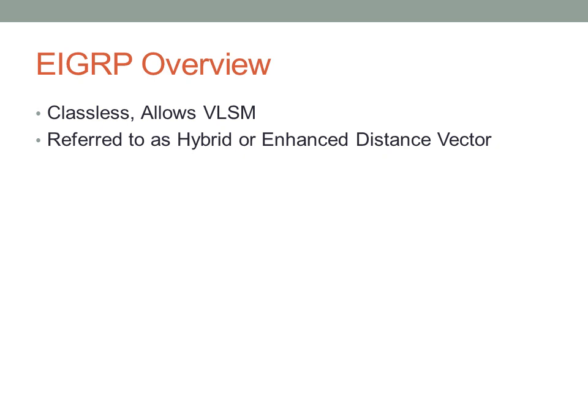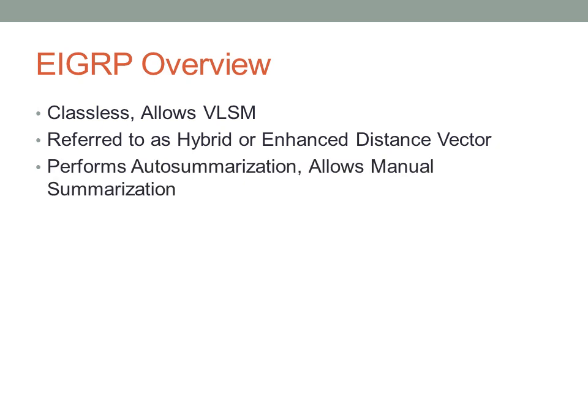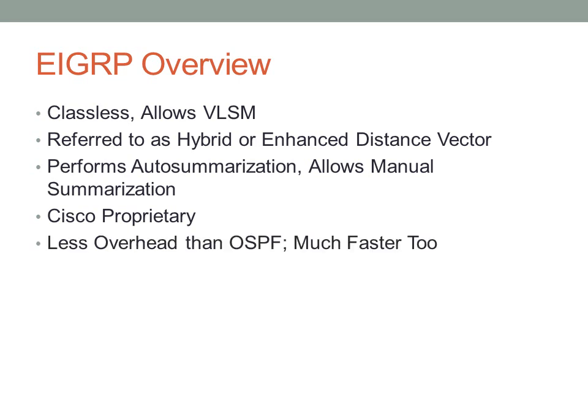EIGRP relies on a distance and a next hop. It relies on information to be summarized by its neighbors, so it's pretty much a distance vector protocol. It does perform auto-summarization, but it also allows for manual summarization. This is one of the unique features about EIGRP. It is Cisco proprietary, so you need to have all Cisco equipment if you want to be running EIGRP in your network.